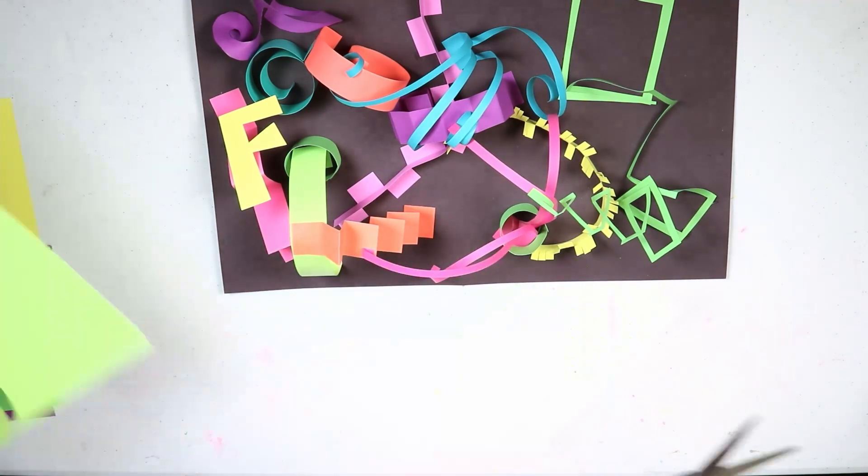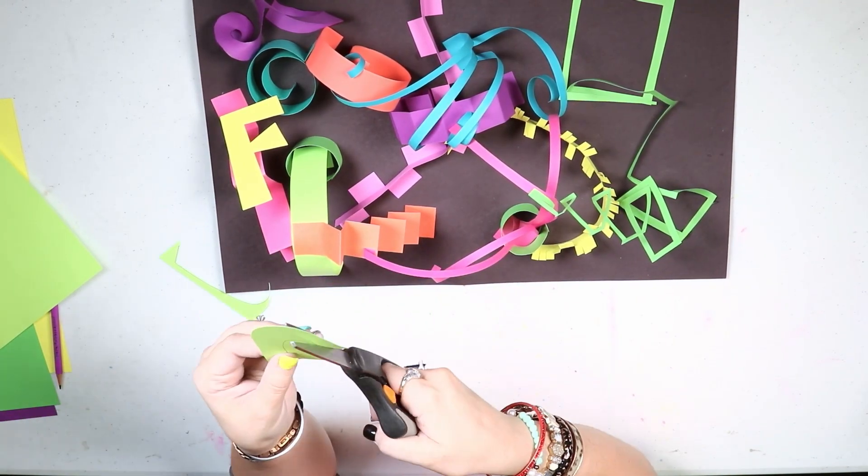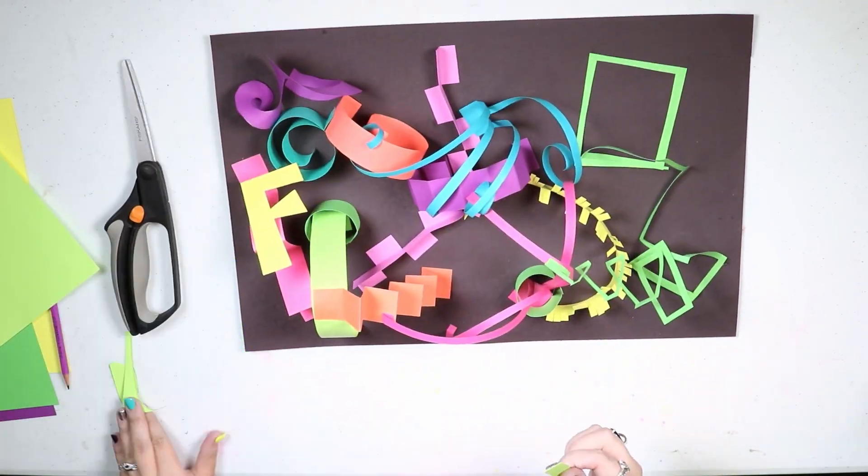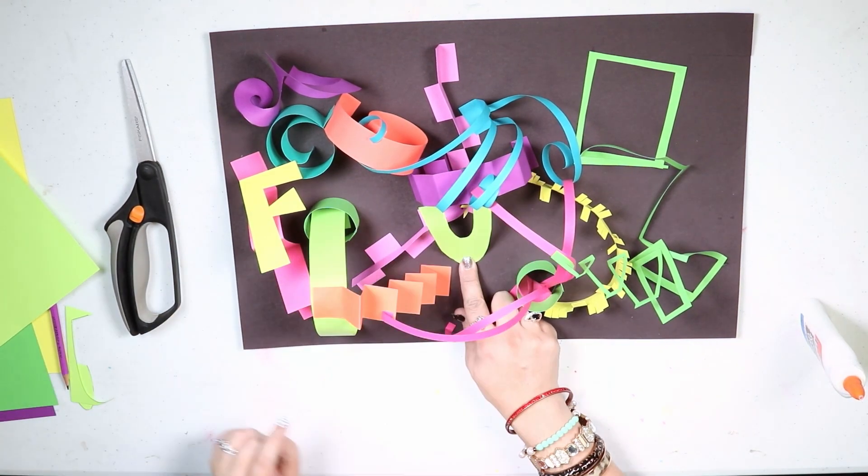Next I drew my block letter U and cut that out and I glued part of it on the paper and part of it on a sculpture.